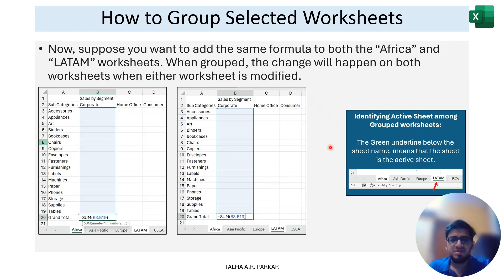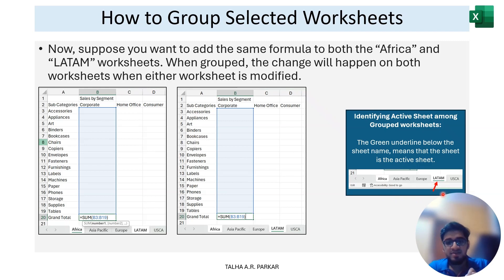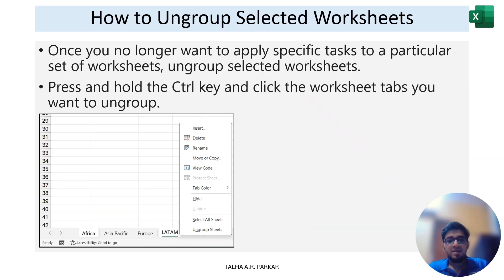An active sheet means the sheet you've currently selected. With grouped sheets, those sheets will have a white background. In this case LATAM and Africa have white backgrounds, but to know which one is the active sheet, there's a green line below the active sheet's name — represented by the red arrow in the screenshot. That's how you identify the active sheet.